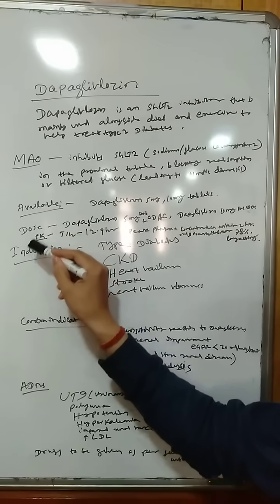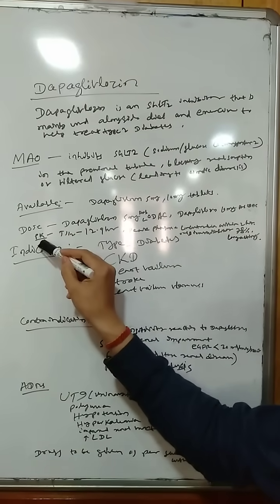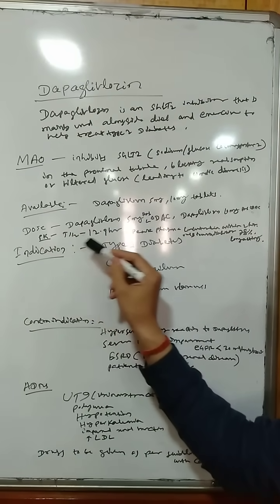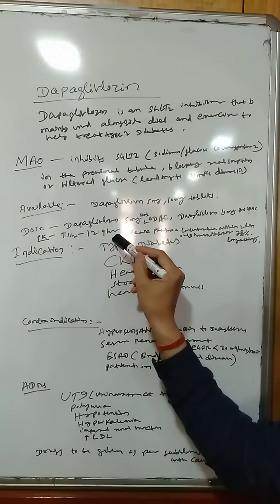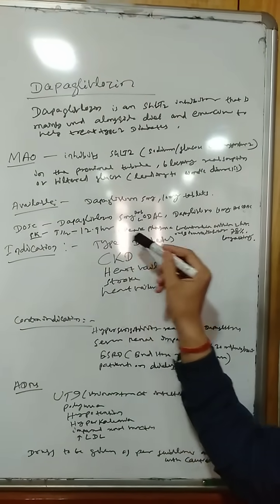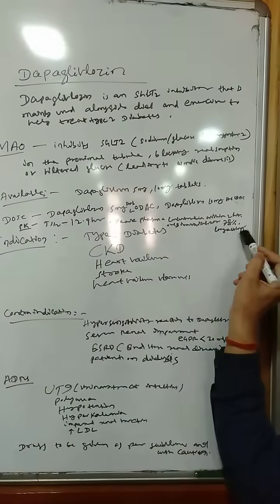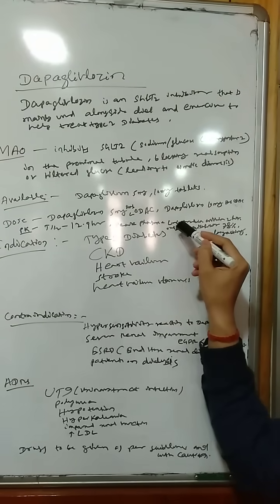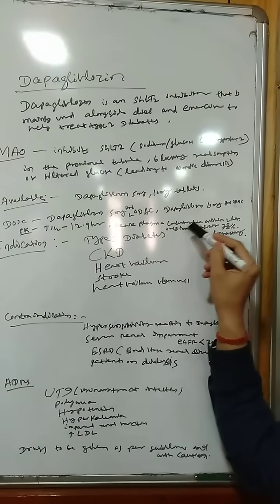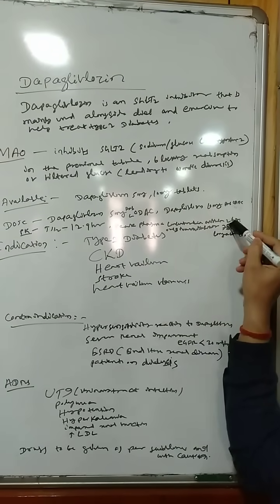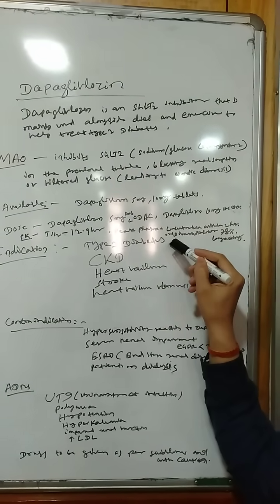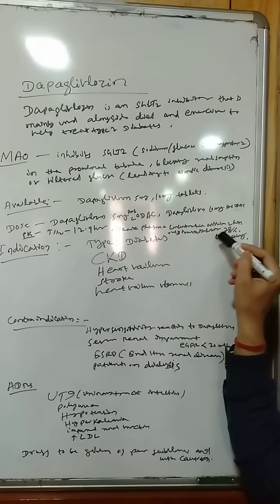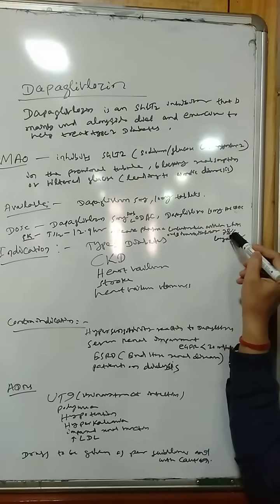Coming to the pharmacokinetic parameters of Dapagliflozin, its half-life is 12.9 hours, so it is a long-acting drug. Peak plasma concentration is reached within 2 hours and the oral bioavailability is 78%.